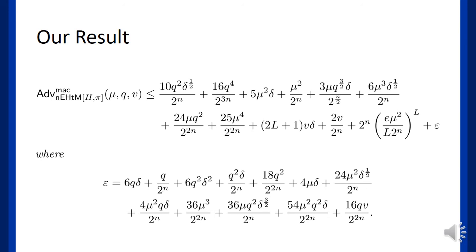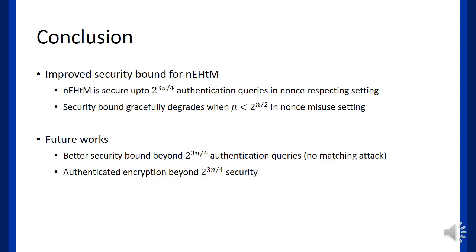The equation is quite complicated. The important dominant term is the first two lines. Here is the conclusion. We proved the 3n/4 bit security of nEHtM using specialized mirror theory. And the security bound gradually degrades when mu is less than 2^{n/2} in nonce-misuse setting.